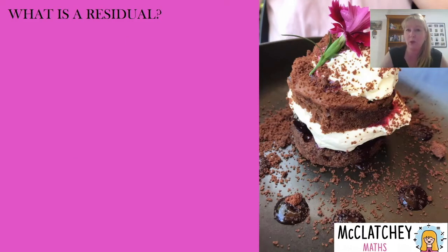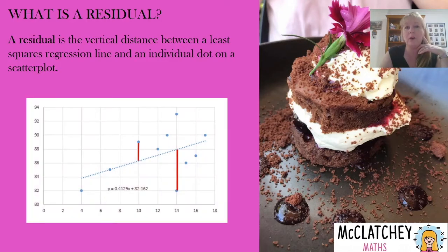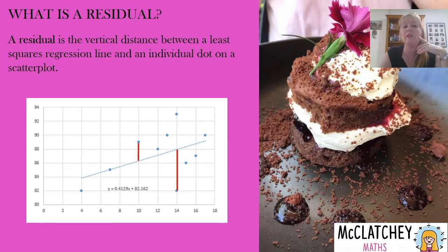Now let's talk about what a residual is first, and this will lead us to how to draw that residual plot to determine if our model is linear or not. The definition of a residual is the vertical distance — the up and down distance — between our least squared regression line and the dots on our scatter plot. We draw the scatter plot first, then we use either technology or develop algebraically our mathematical model, being our least squared regression line, and it falls in between all of our dots. That vertical distance is shown in red between every dot — these are the real life happenings of the data we've collected versus our model, shown by the line passing between them.